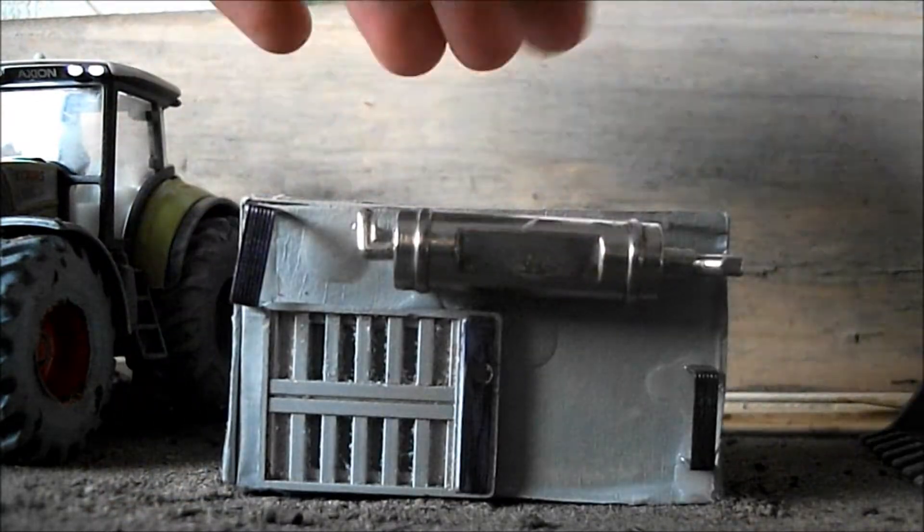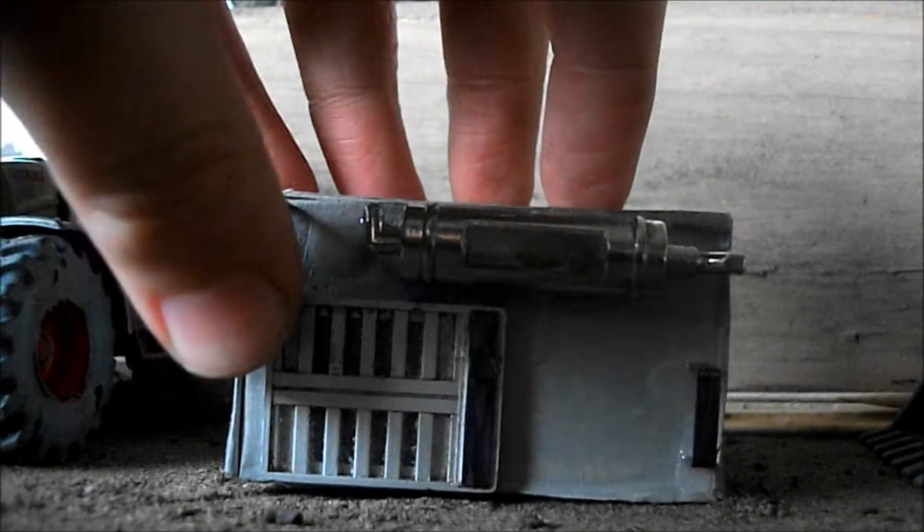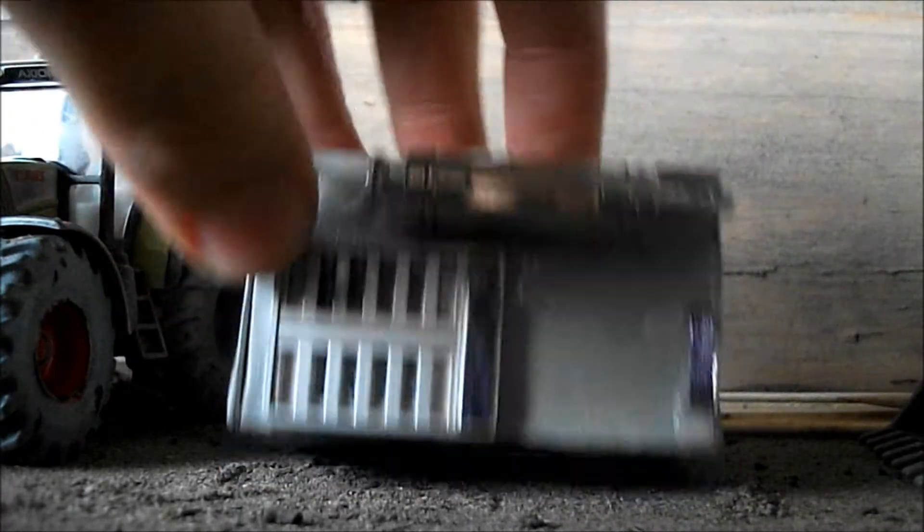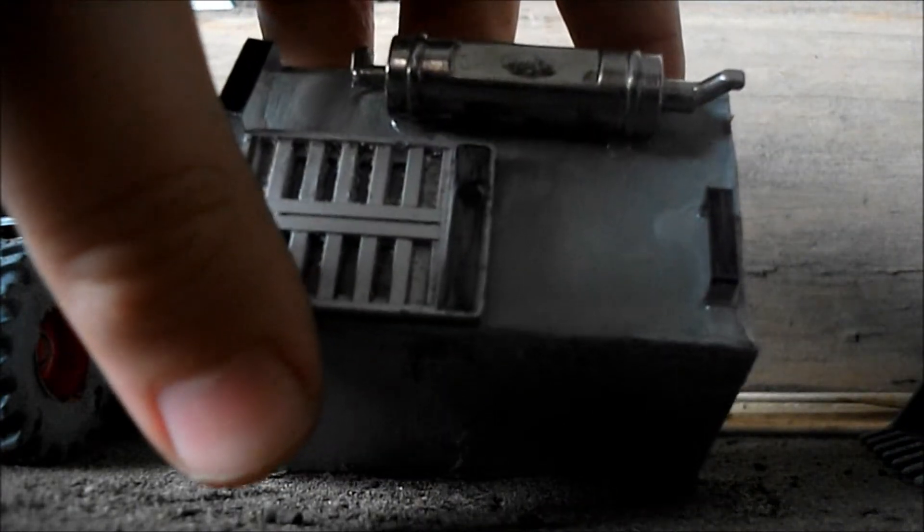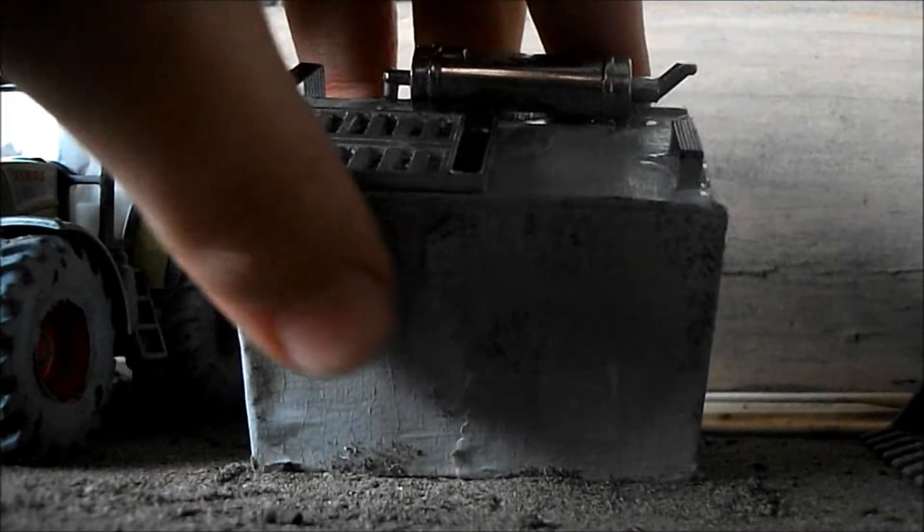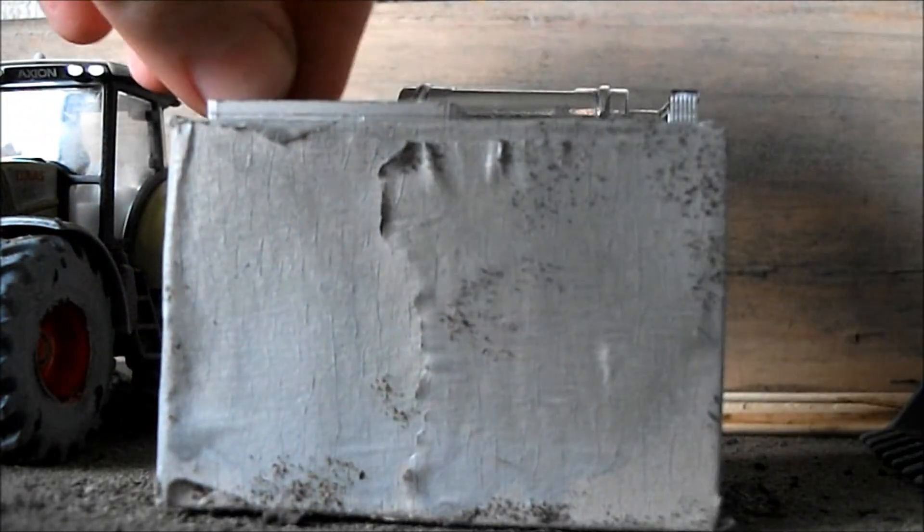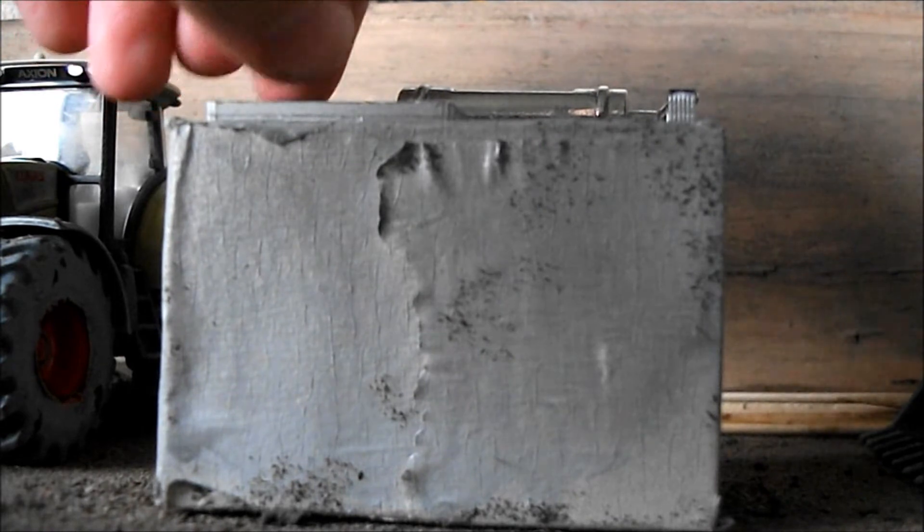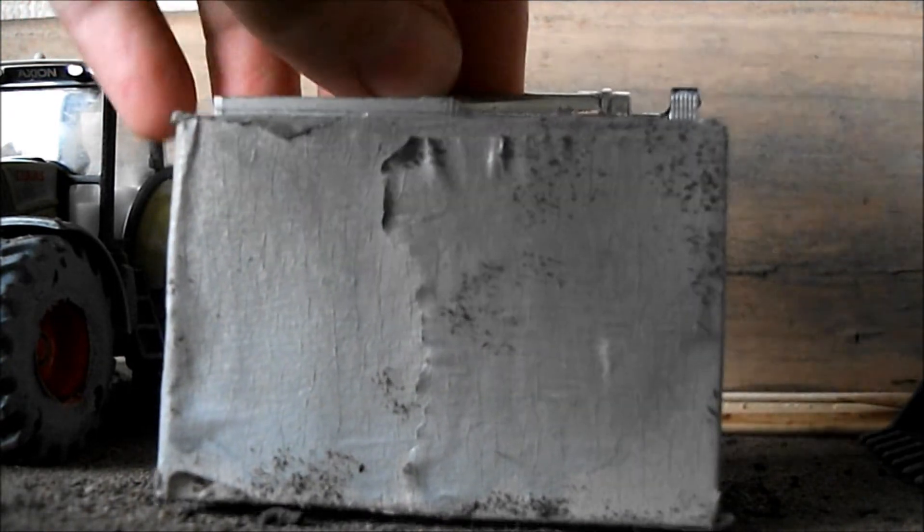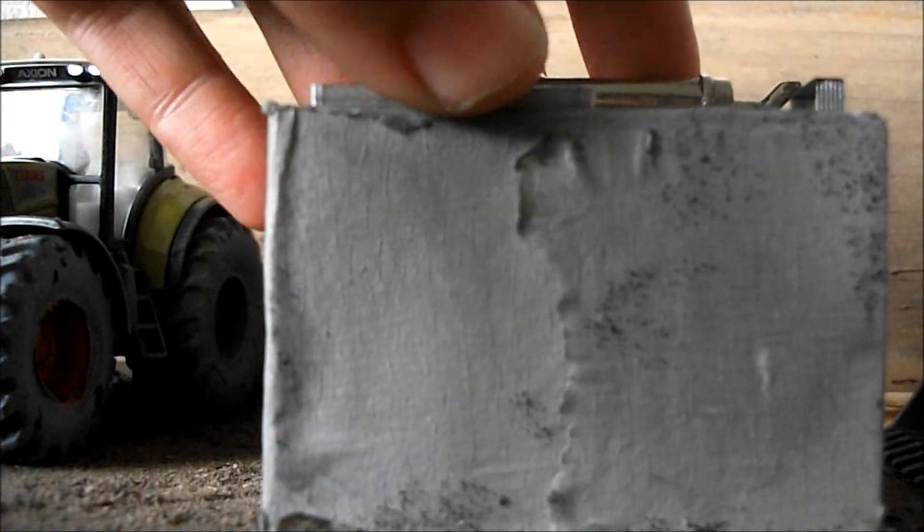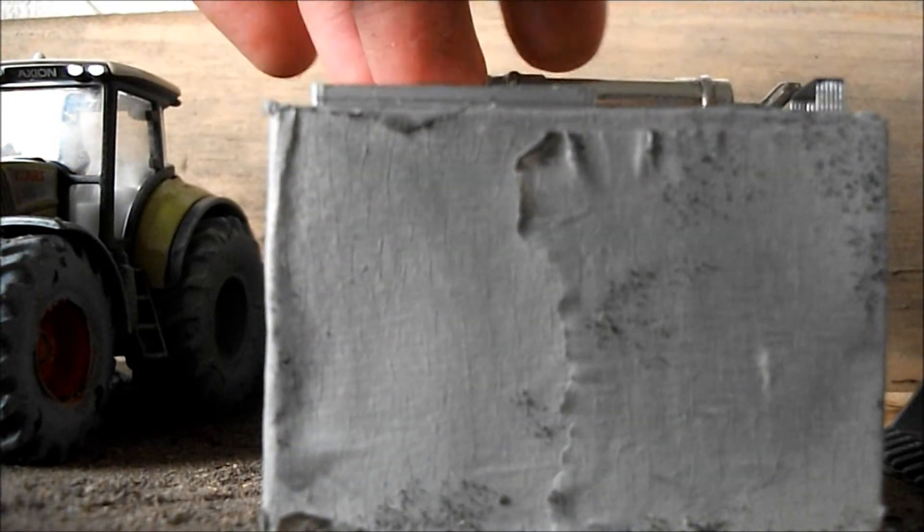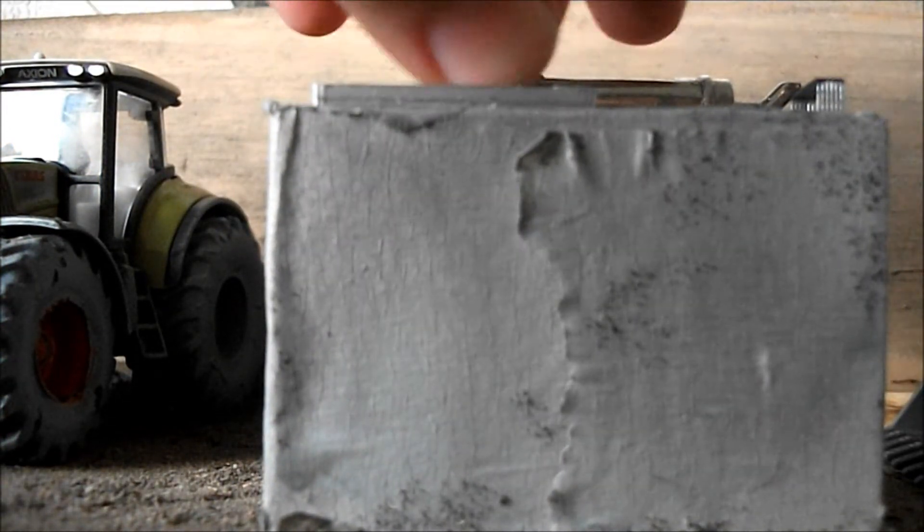Now, on the top we've got an exhaust and a grill. And then, two lifting hooks. Now, the lifting hooks are just simply staples which are all stuck together because that's how they come to put into a stapler. I just broke some off. And the exhaust and grill came off an old 1/32nd scale trailer I had.